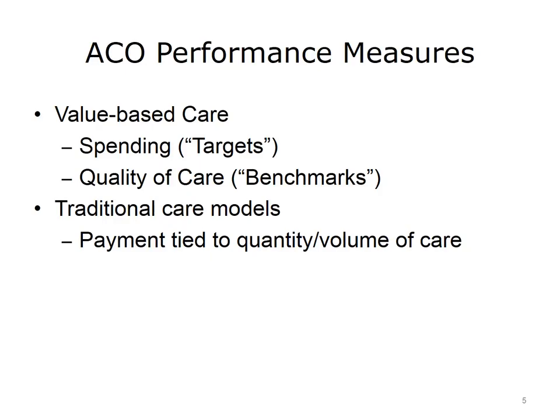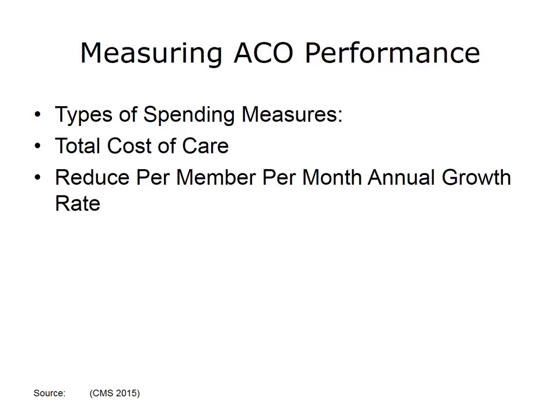This section will focus on the potential ways ACO performance will be measured. We will describe how ACOs will set spending targets and quality of care benchmarks. These two categories of measurement are central to the values-based concept of the ACO, which is different from traditional payment systems and incentives tied to the quantity or volume of care provided. In most cases, ACO spending performance is focused on measures of the total cost of care for a defined set of patients. In other cases, ACOs set spending targets related to a reduction in some measure, such as the per-member, per-month growth rate in spending.